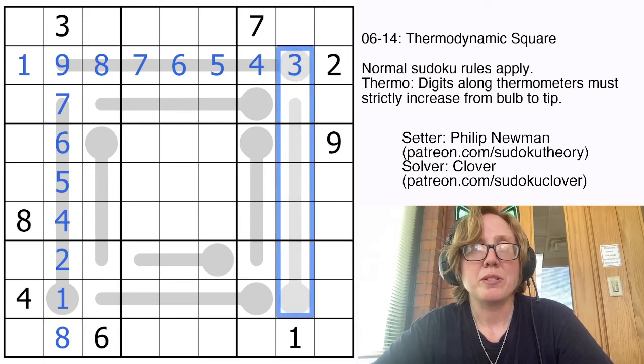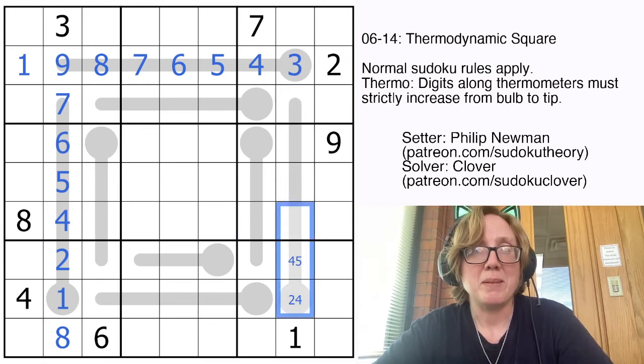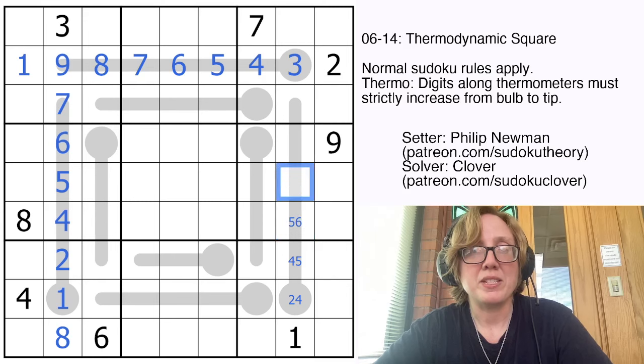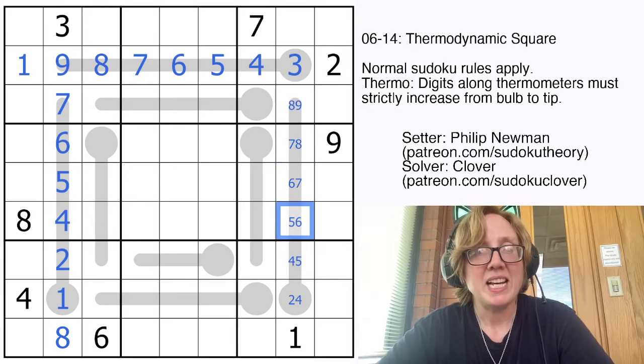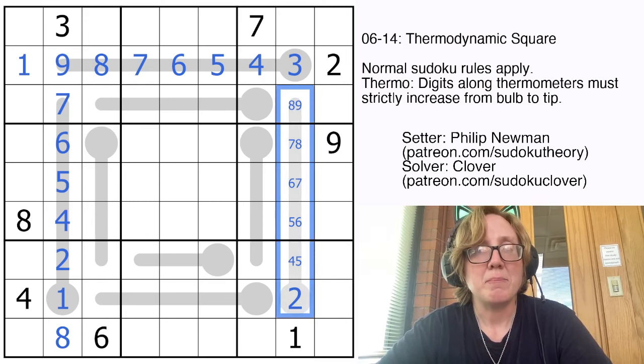Now I also have 1 degree of freedom here. This will be 2 or 4, 4 or 5, 5 or 6, 6 or 7, 7 or 8, and 8 or 9. This is a little bit trickier to fill in. I do get a 2 right here, but I'm gonna have to leave the rest of it for the time being.